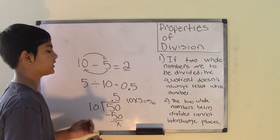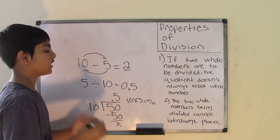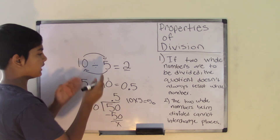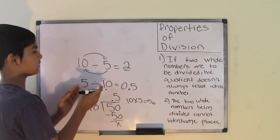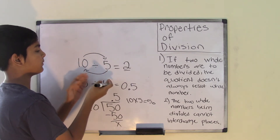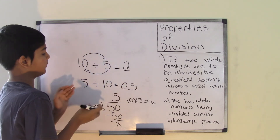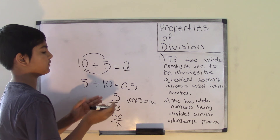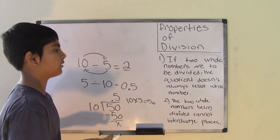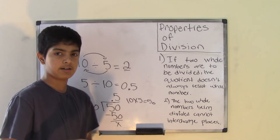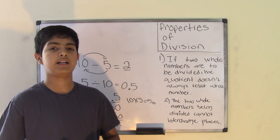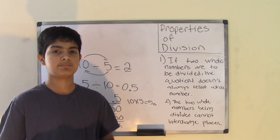The number 0.5 is a decimal number and it's not a whole number. So our second property is true: you cannot interchange the places of two whole numbers when dividing. As you can see, 10 divided by 5 gives us 2, which is a whole number, but 5 divided by 10 gives us 0.5, which is not a whole number. So those are the two properties of division. I hope you got all you needed to know. Check out our blog at matclub.com. We'll see you guys next time. Bye!